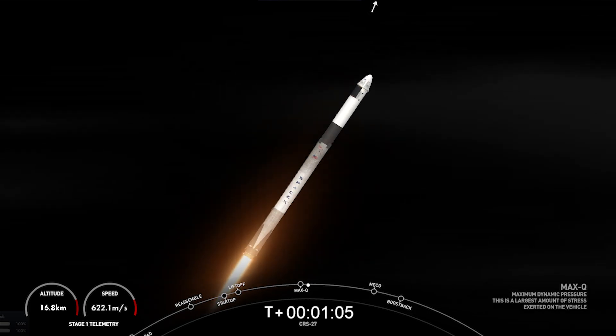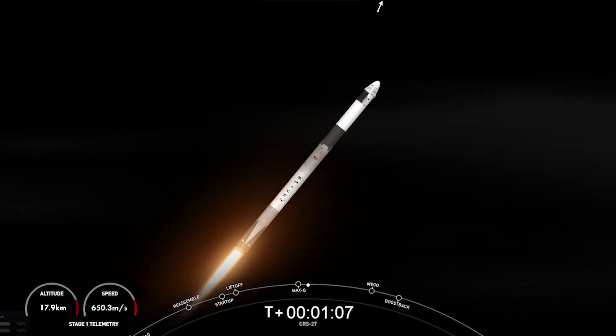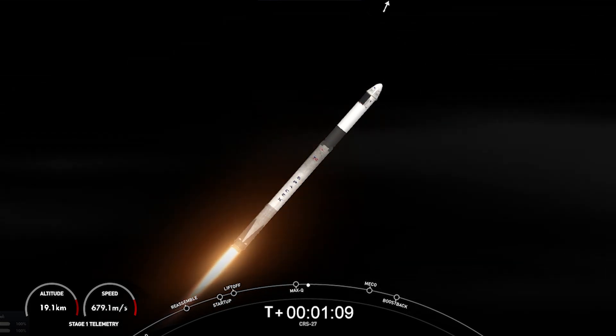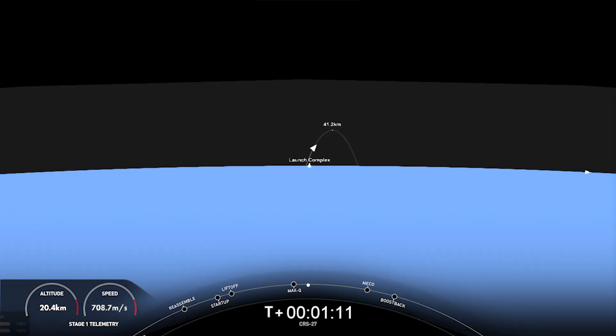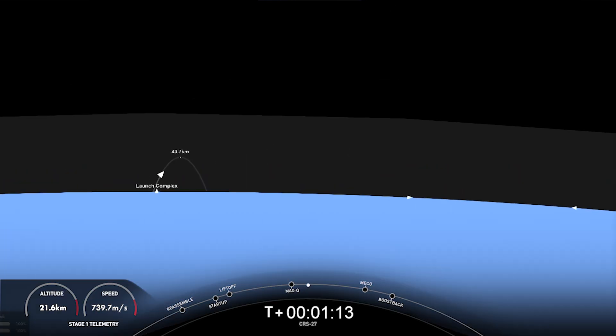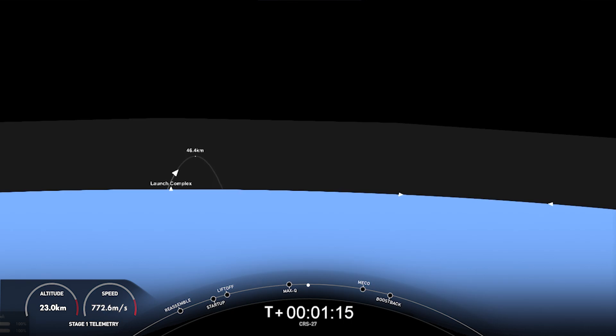Coming up next are five events back-to-back. First is main engine cutoff, or MECO, which is when all nine of the Merlin 1D engines on the first stage will shut down. After those nine engines shut down, the first and second stages will separate.